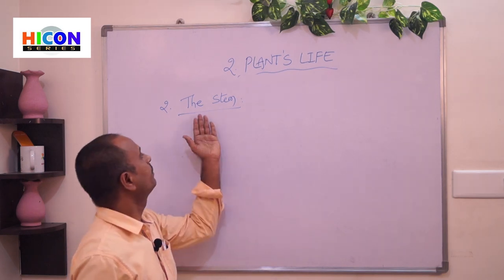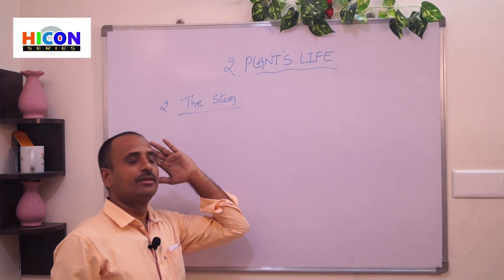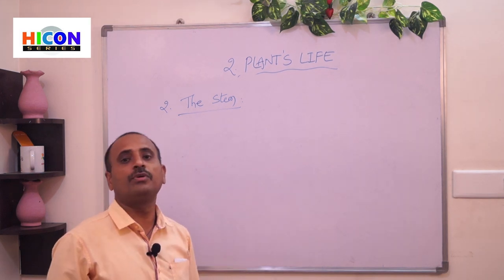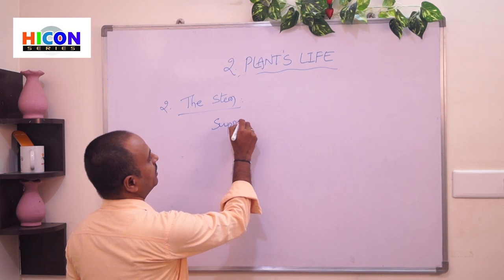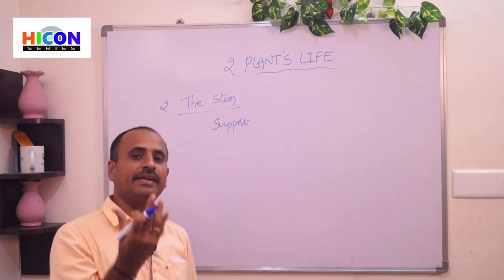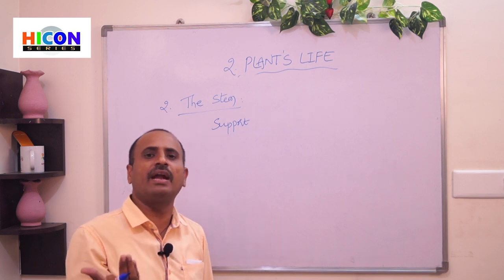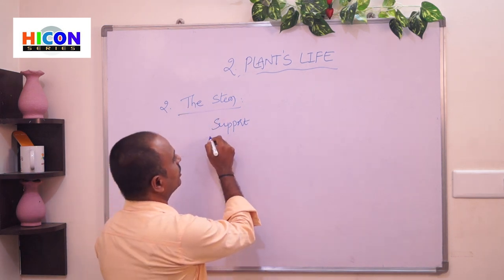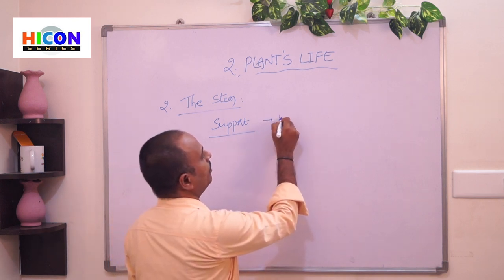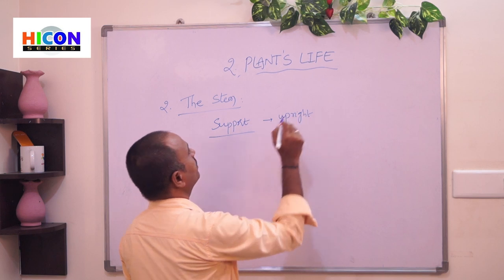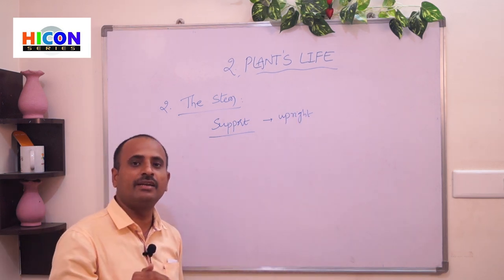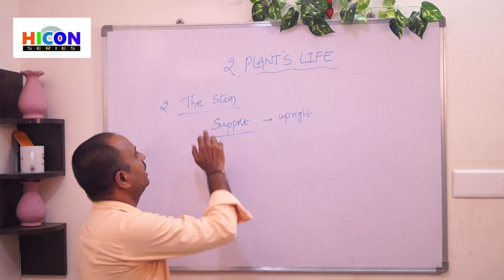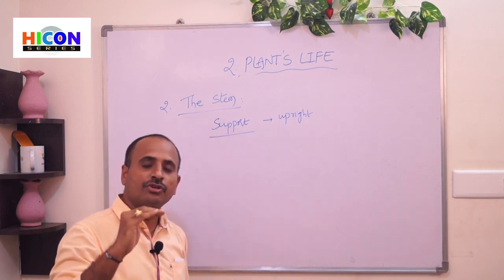The second important part of the plant is the stem. The stem is very important for the plant because it gives support, holds the plant upright, and prevents it from bending or falling down. The stem is the part of the plant which grows above the soil, while roots grow below the soil.